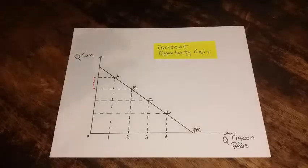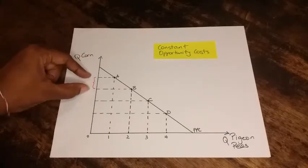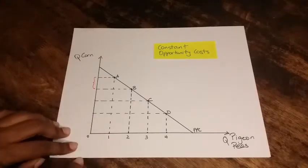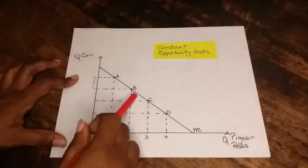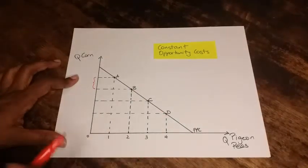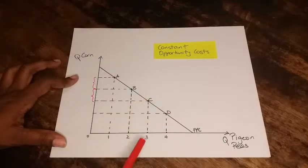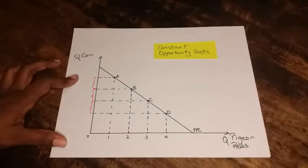This means as I produce more units or additional units of pigeon peas, what I have to give up in terms of corn would be constant. Notice as I move from zero to one unit, look at the distance here as I move from A to B. If I move from B to C, increasing again by one unit, the distance is the same. Likewise, as I move from C to D, from three to four units, the distance is the same. So we have constant opportunity cost.